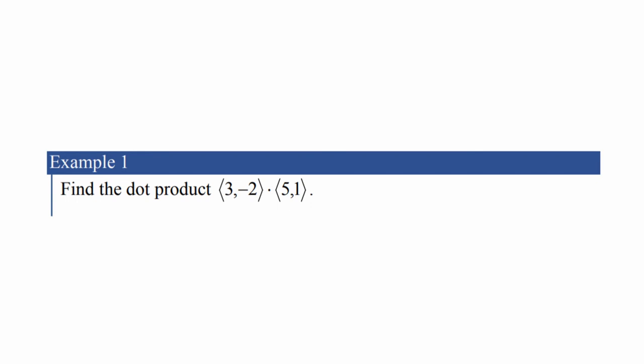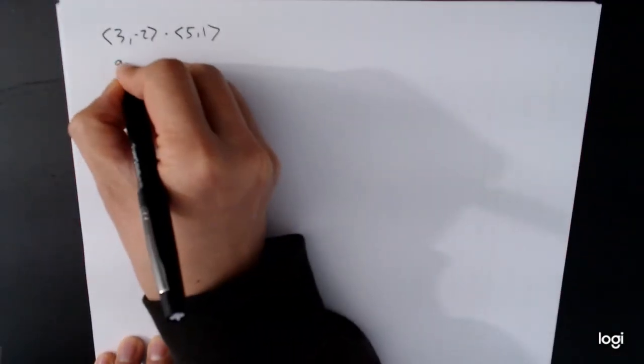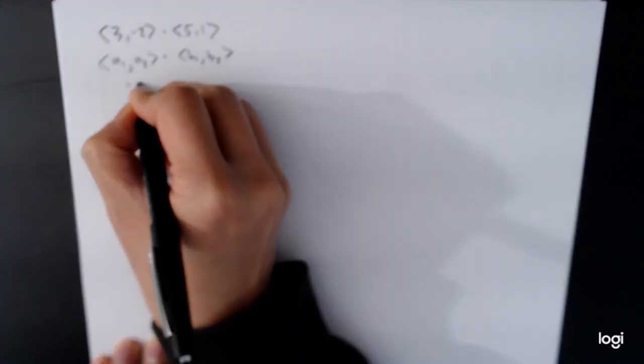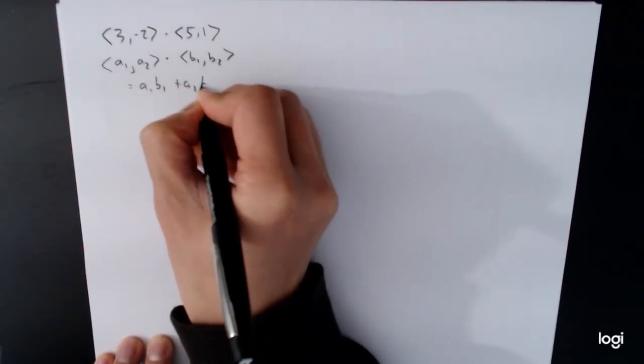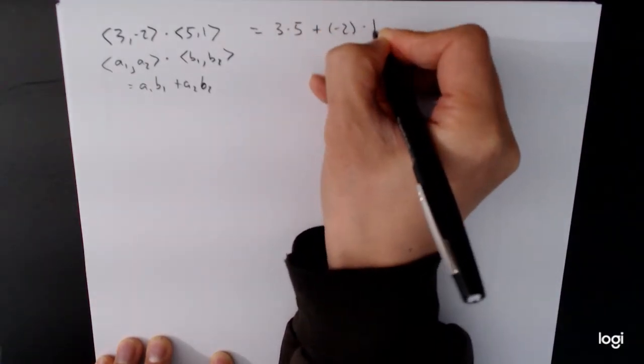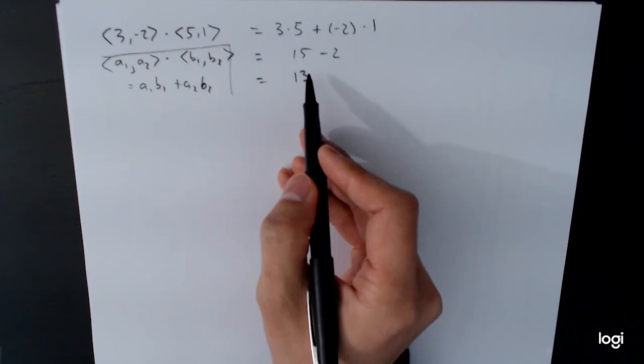So let's look at a couple quick examples of this. Example, find the dot product 3, -2 dot 5, -1. Okay well this is just an application of formula. Here's our vector a, here's our vector b, here's a1 comma a2. That's b1 and b2. And the formula for this is a1 b1 plus a2 b2. And so 3 times 5 plus negative 2 times 1. Watch your negative sign. This is equal to 15 minus 2, which is 13. Now at this specific moment we don't have an interpretation of what this number 13 means. We just know that this is the result that we get from plugging things into the formula.